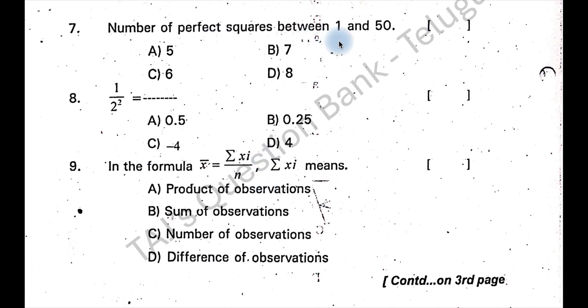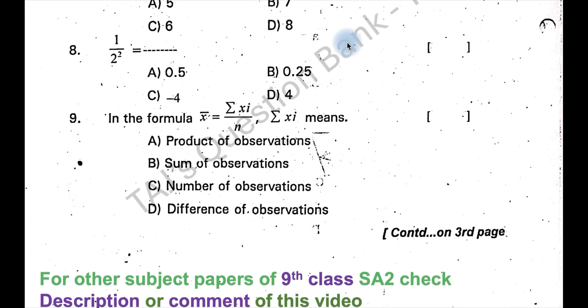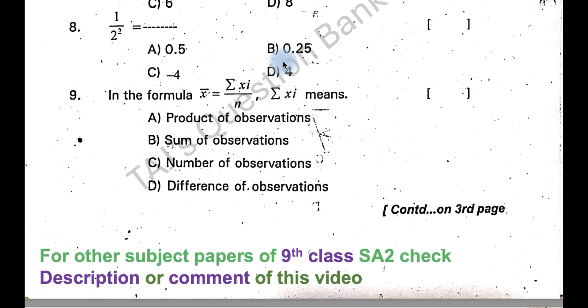Number of perfect squares between 1 and 50, how many are there? 7. The answer is option B.